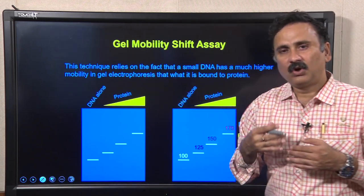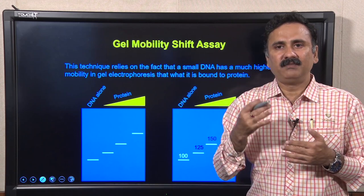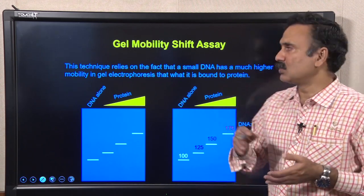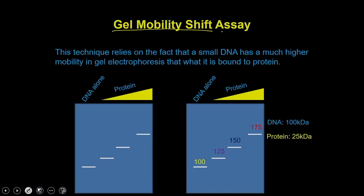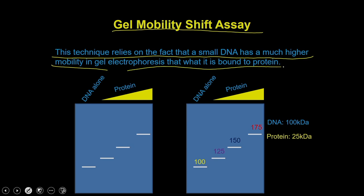This interaction between protein and DNA is mapped using a technique called the gel mobility shift assay. This technique relies on the fact that a small DNA has a much higher mobility in gel electrophoresis than when it is bound to a protein. When running the electrophoresis of DNA alone, the DNA will migrate to a certain point.